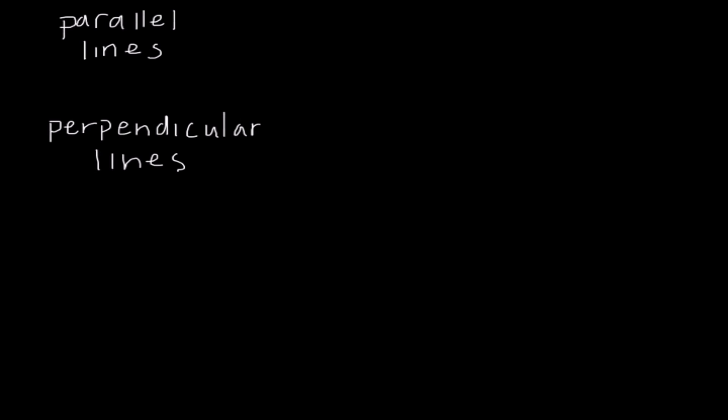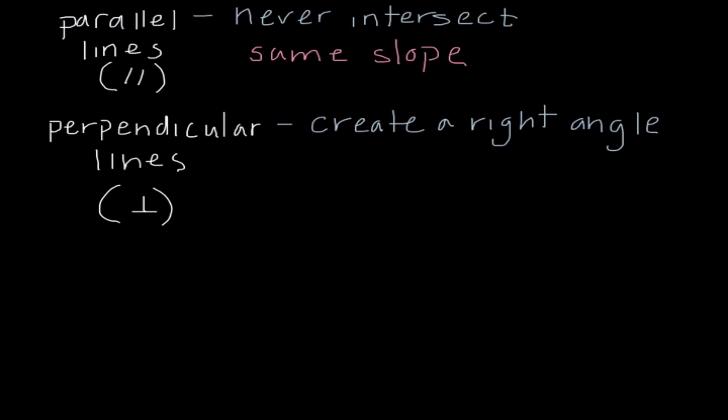So the next topic I want to talk about is comparing parallel lines with perpendicular lines. Now, right away when you hear parallel and perpendicular, my guess is the geometry version of the definitions kind of pop into your head. And that would be that parallel lines never intersect, and that perpendicular lines create a right angle. Just a reminder, parallel lines we often show with the two lines that look parallel to each other, and perpendicular lines we use that upside-down T. So these are valid definitions, but the definitions we're going to be using are going to be that parallel lines always have the same slope, and that perpendicular lines have slopes that are opposite reciprocals.